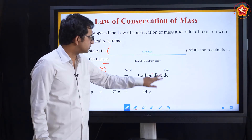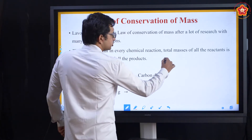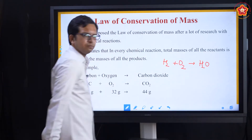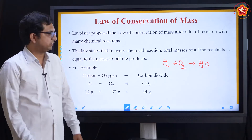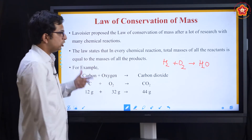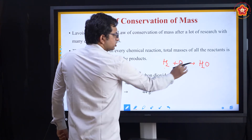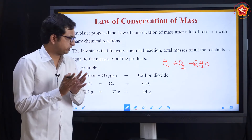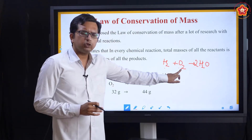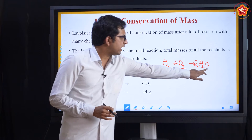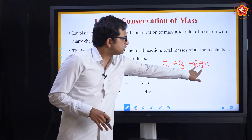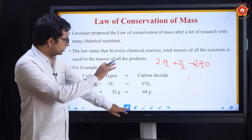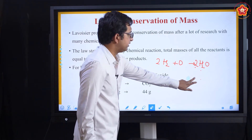As another example: H2 + O2 gives H2O — the production of water. First, you must balance this chemical reaction; otherwise you cannot calculate the masses. On the left, we have 2 hydrogens and 2 oxygens, but on the right only 1 oxygen in water. So we write 2H2O to balance it. In the process, the hydrogen count becomes 4 (2 × 2), so we also write 2H2 on the left. This gives the balanced reaction: 2H2 + O2 → 2H2O.